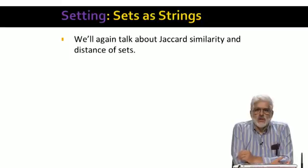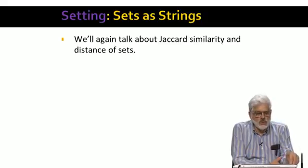To set the stage, we're back to talking about sets and their Jaccard distance. Recall that Jaccard distance is 1 minus the Jaccard similarity, and Jaccard similarity of two sets is the size of their intersection divided by the size of their union.